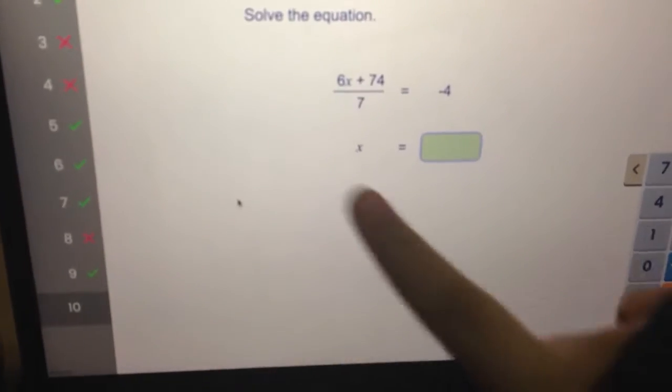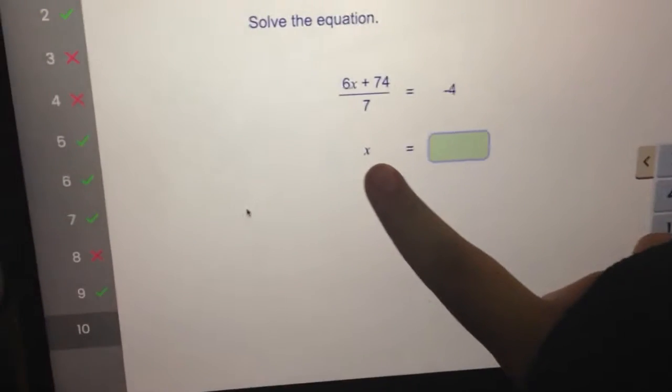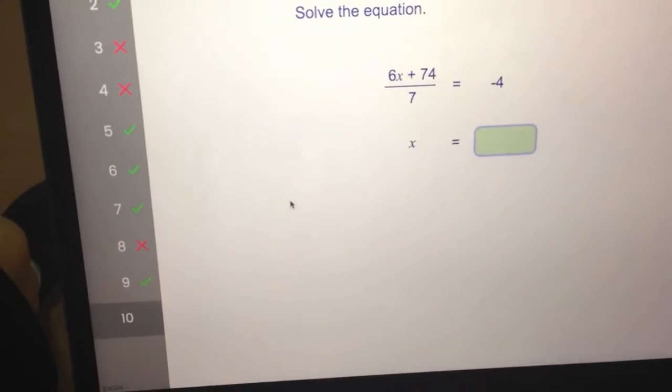This is what I need to find out: 6x plus 74 divided by 7 equals negative 4. Yes, all right Tristan, can you write that on the board please?